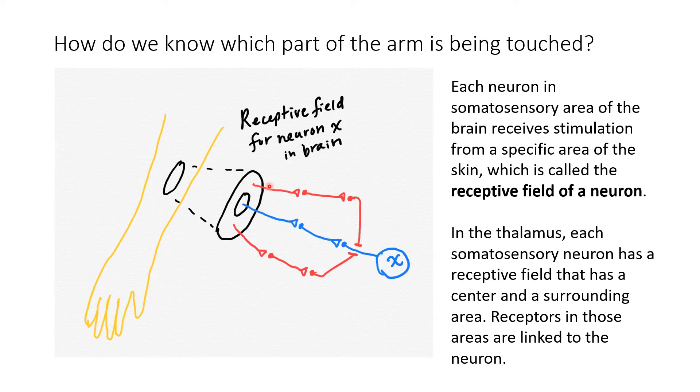In the thalamus, each somatosensory neuron has a receptive field that has a center area and a surrounding area outside the center. All the receptors from this whole receptive field have a connection to a target neuron. But some of them send excitatory signals along a centralized pathway, which is the blue connection here,